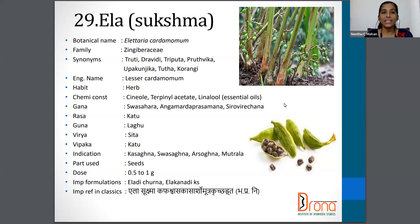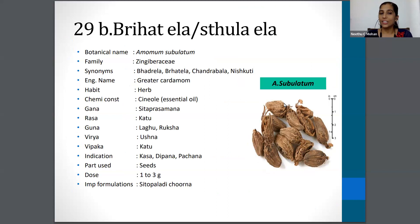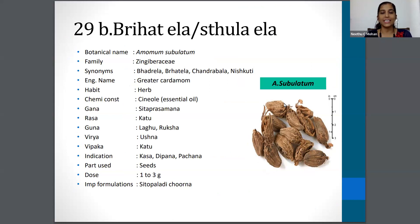Moving on to the next one, which is Brihatela or Sthulaila. Botanical name is Amomum subulatum. Family is Zingiberaceae again. Synonyms are Badrila, Brihatela, etc. The English name is Greater Cardamom. The part used is Seeds, and the dosage is 1 to 3 grams.